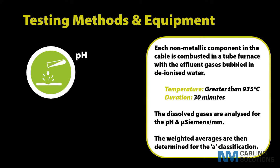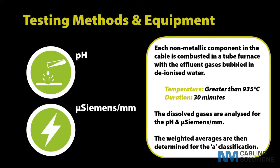Acidity or corrosiveness of the gas is measured by way of a pH measurement, and conductivity is the ability of the dissolved solution to conduct electricity. Conductivity is also directly linked to the total dissolved solids in the solution and is expressed as micro Siemens per millimetre.